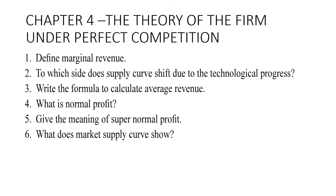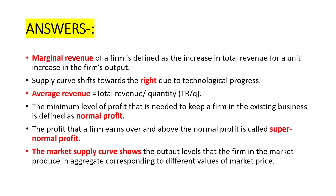Coming to the fourth chapter — theory of the firm under perfect competition. The questions include: define marginal revenue; to which side does the supply curve shift due to technological progress; write the formula to calculate average revenue; what is normal profit; give the meaning of supernormal profit; and what does the market supply curve show. Marginal revenue of the firm is defined as the increase in total revenue for a unit increase in the firm's output. Due to technological progress, the supply curve shifts towards the right.